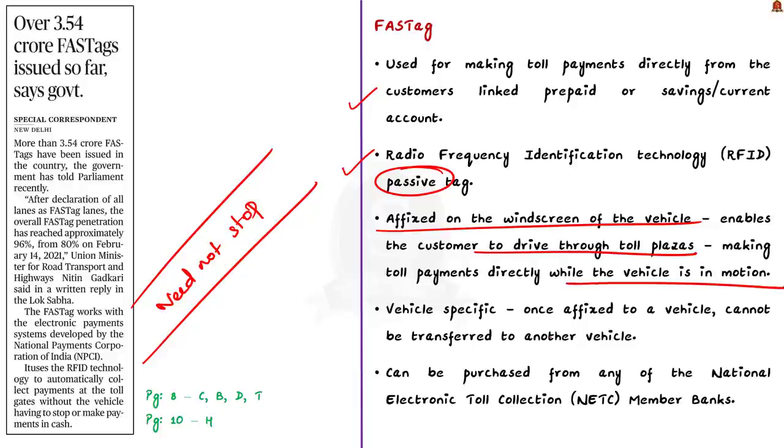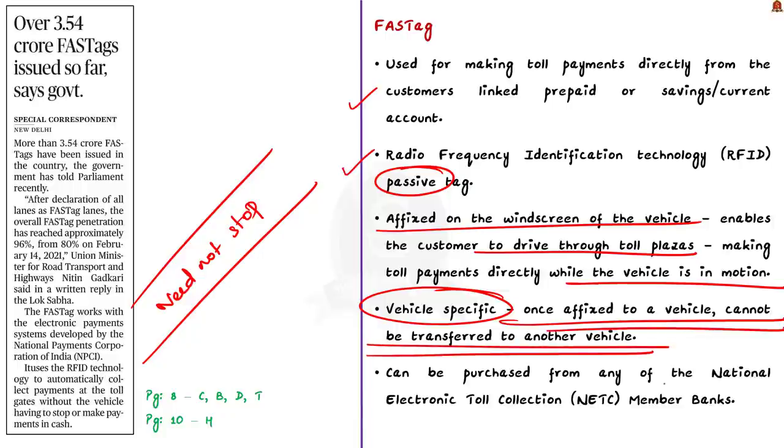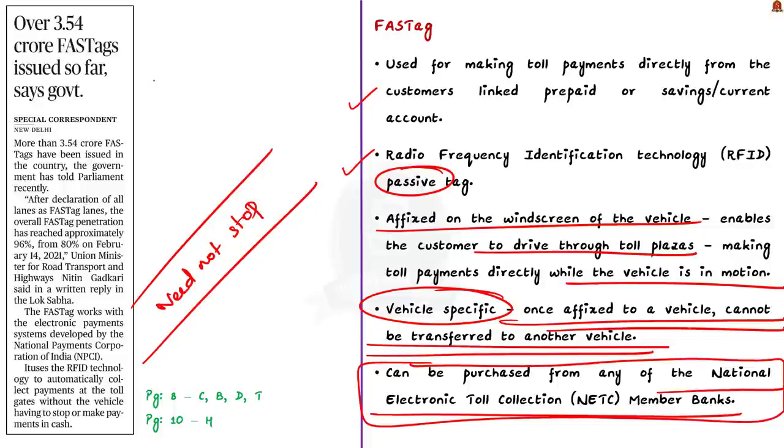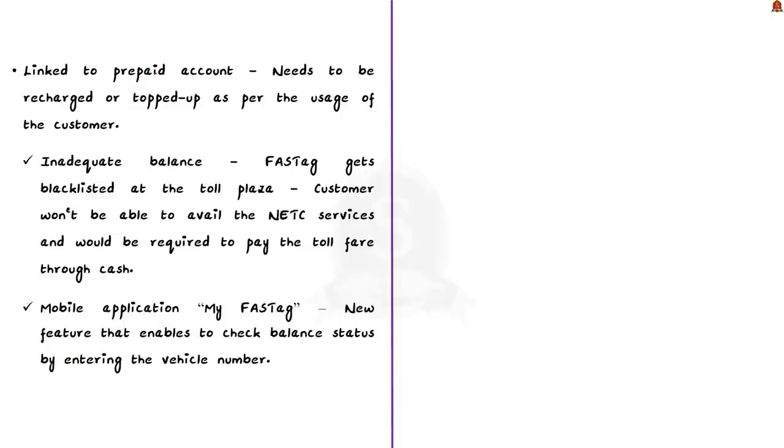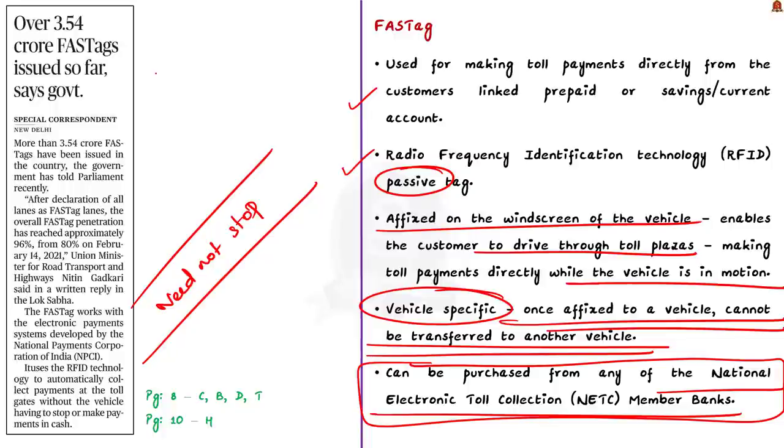Another important feature of FASTag is that it is vehicle specific and not customer specific. Which means that once it is fixed to a vehicle it cannot be transferred to another vehicle. So where can we get this FASTag? It can be purchased from any of the national electronic toll collection member banks, in short NETC member banks. NETC is developed by the National Payments Corporation of India. It is a program launched to ease out traffic woes and create an efficient and interoperable system on a national scale by covering all toll plazas.